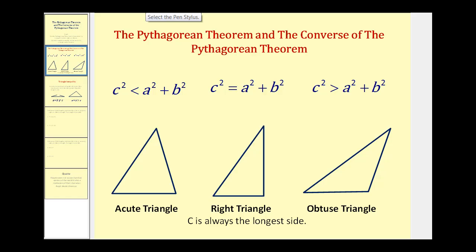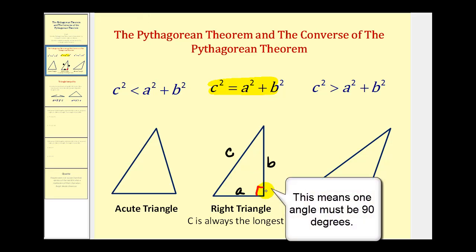Let's start by reviewing the Pythagorean Theorem, which states that c squared is equal to a squared plus b squared, where c would be the hypotenuse, or the longest side, and a and b would be the length of the two legs. So if we know the length of these three sides and c squared is equal to a squared plus b squared, we would have a right triangle.